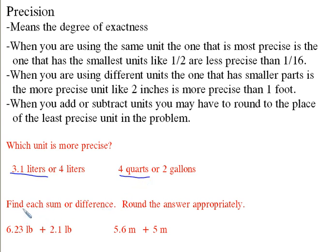Now, here, find each sum or difference and round the answer appropriately. Now, when you go ahead and you have a problem like this, 6.23 pounds plus 2.1 pounds, all you do is you add them together, and you just go ahead and go, well, this is going to be 8.2 plus 1. That's going to be 8.33 pounds.